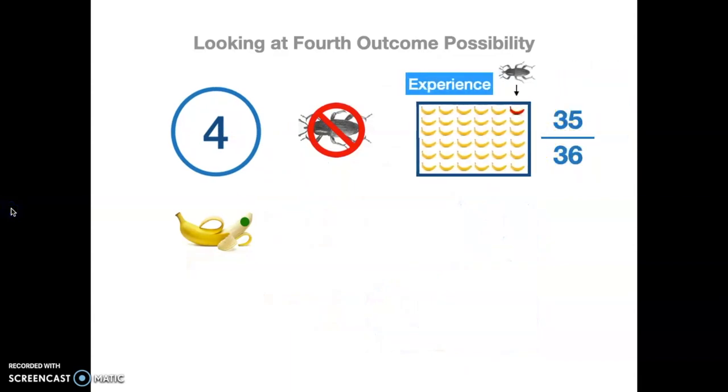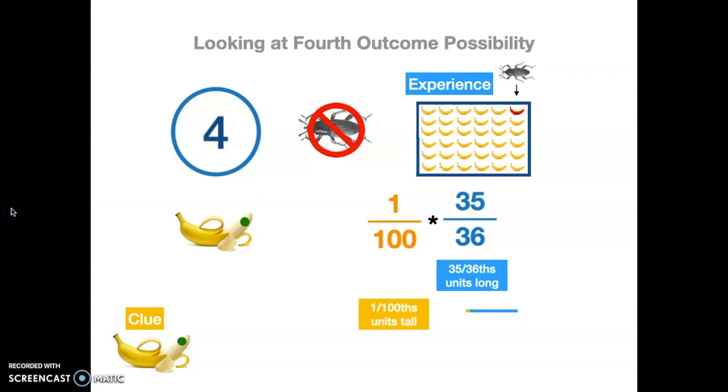Fourth scenario, you still got that 35 over 36, those yellow bananas, not the red banana, just in general, that's what you have with bugs inside of bananas. And then you've got the clue. So the clue says, one out of 100 times, there's going to be a false positive test, there's going to be that green circle, green spot, but still no bug in there. So again, multiply those together. And now you've got a little shape rectangle that's 35 over 36 units long by 1 over 100 units tall.